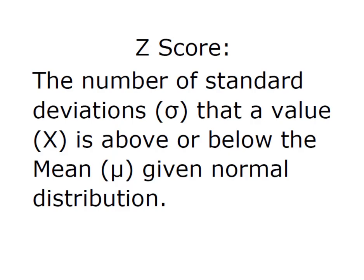So what is a z-score? A z-score is simply the number of standard deviations that a value of x is located above or below the mean of the distribution given that we have normal distribution or have placed ourselves in a position where normal distribution can be applied.